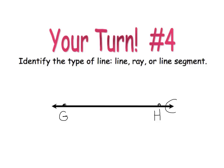Okay, I can see that it has an arrow on each end, meaning it's going on forever in both directions. And so this is line GH.